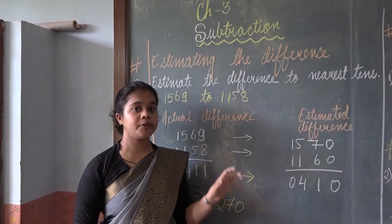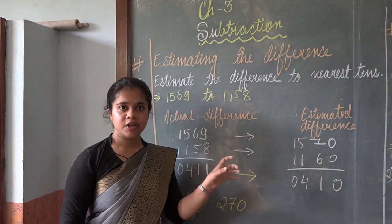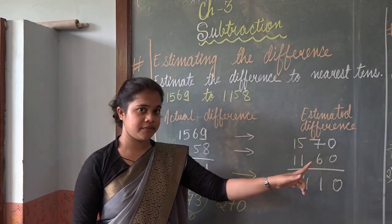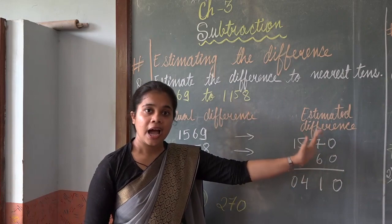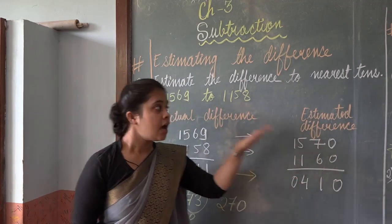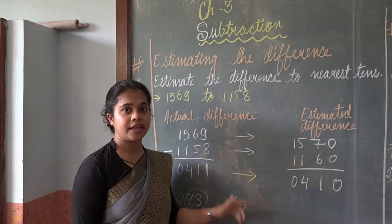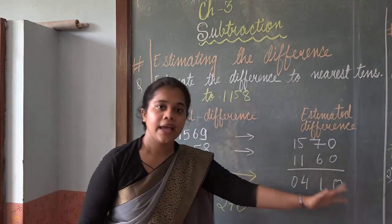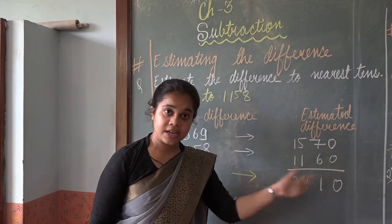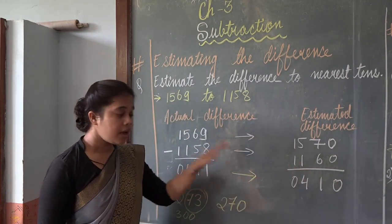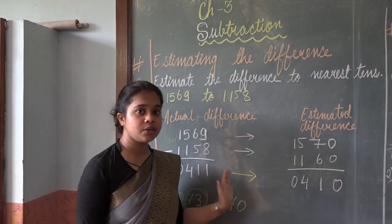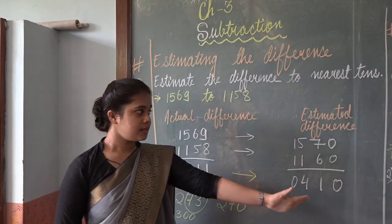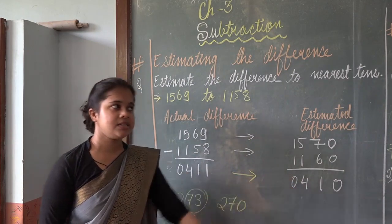While solving the question, read it properly. If the question says estimate to nearest tens and then find the difference, you estimate first and then find the difference. If it says find the difference and then estimate to nearest hundreds, you find the difference first and then estimate. So read the question carefully.